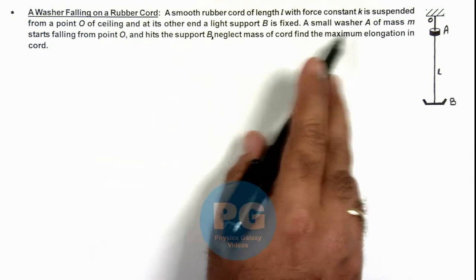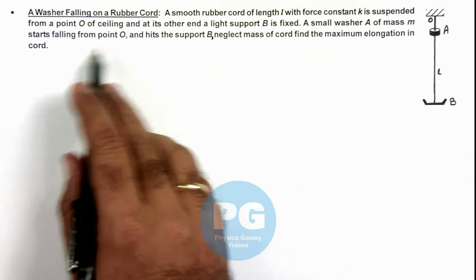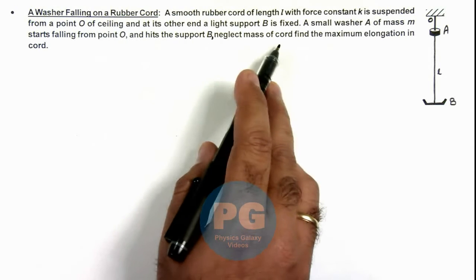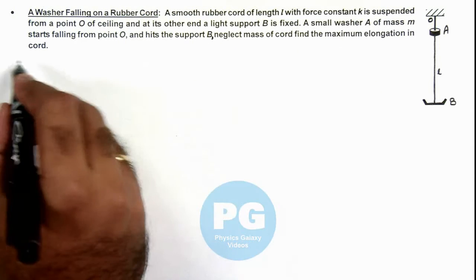A small washer E of mass m starts falling from point O and hits the support B. Neglecting mass of the cord, we are required to find the maximum elongation in the cord.